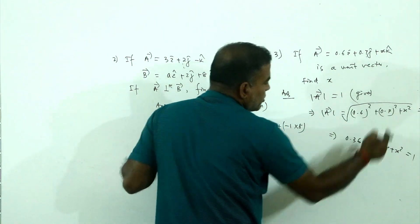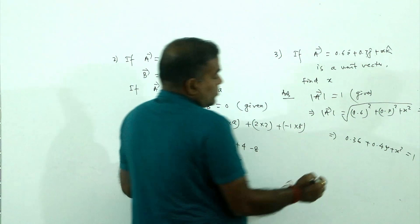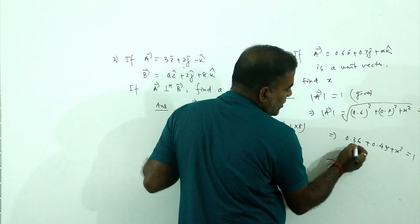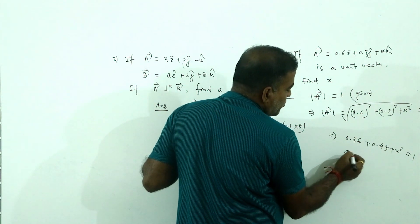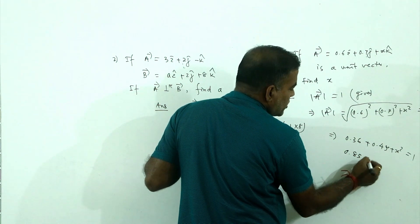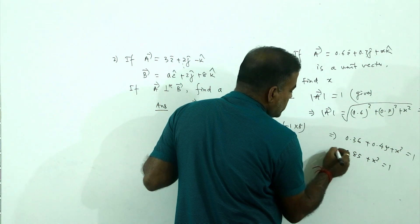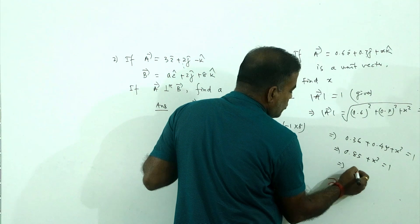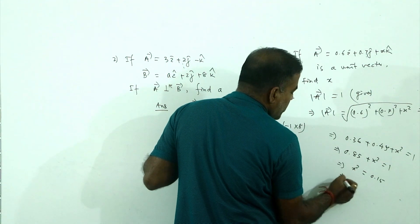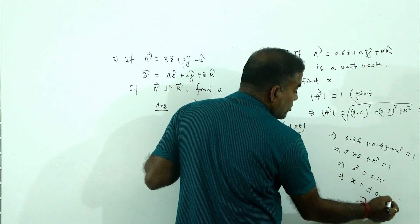This implies 0.6² plus 0.7² plus x² equals 1, so 0.36 plus 0.49 plus x² equals 1. That gives 0.85 plus x² equals 1, so x² equals 0.15, and therefore x equals plus or minus root 0.15.